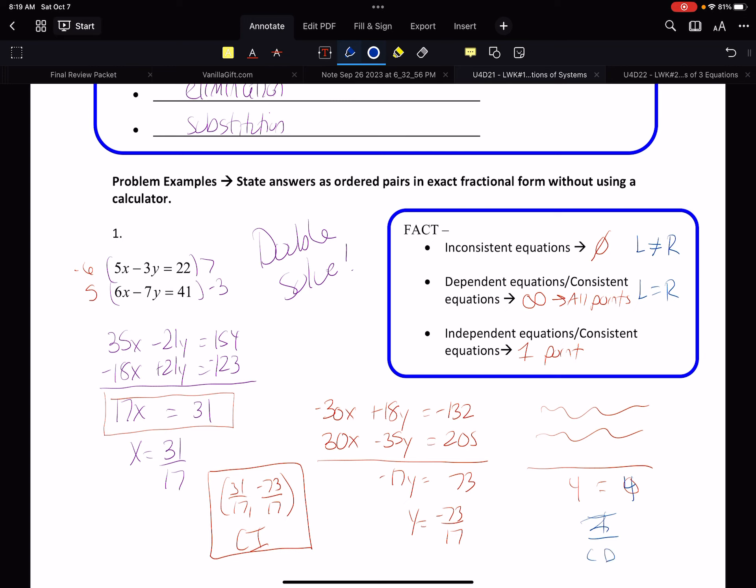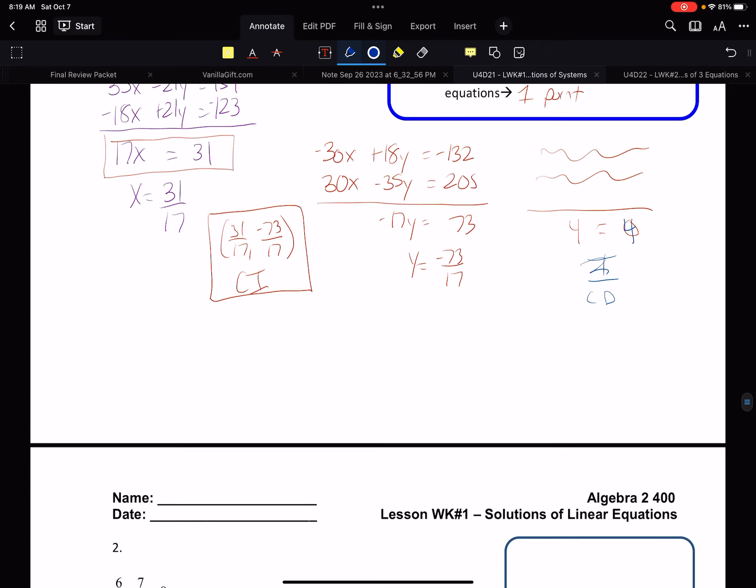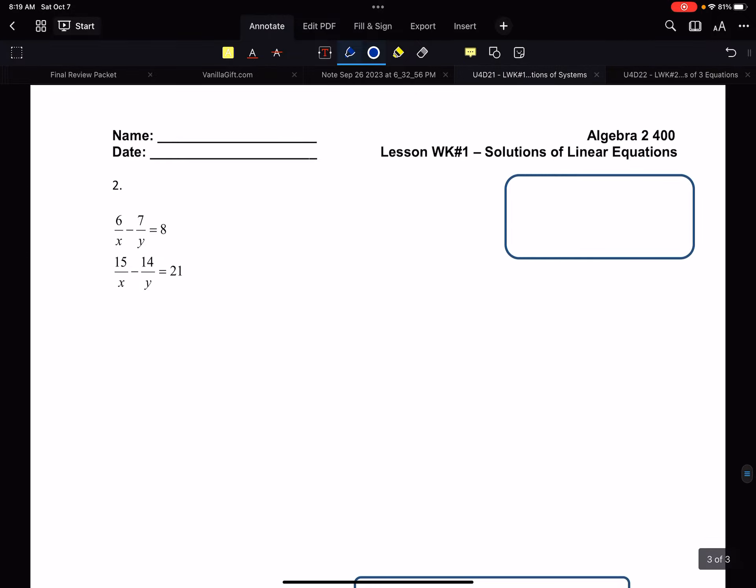So the normal situation is we solve, we get an x, we get a y. Done. If we lose the variables, that means it's inconsistent or it's a consistent dependent and we have to figure out which one it is.